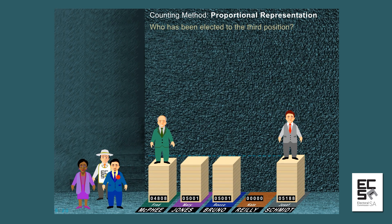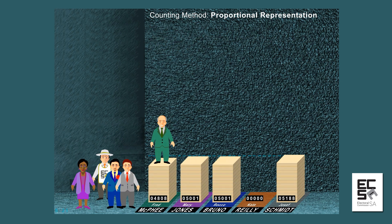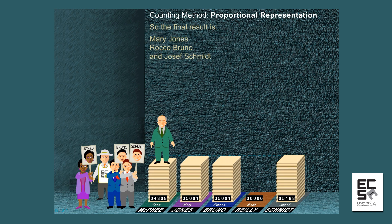Joseph Schmidt is the third candidate elected with 5,188 votes. So the final result is: Mary Jones, Rocco Bruno and Joseph Schmidt have each been elected. Thank you, Mary Jones.